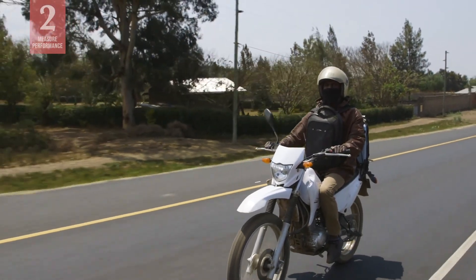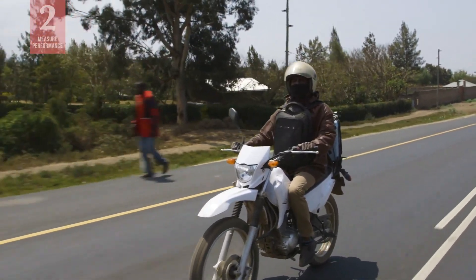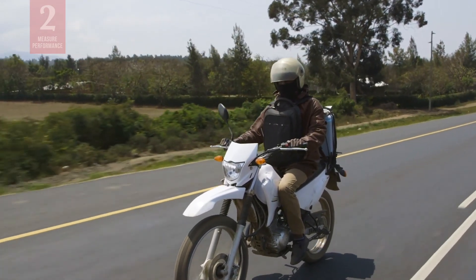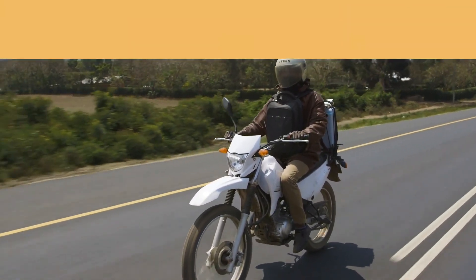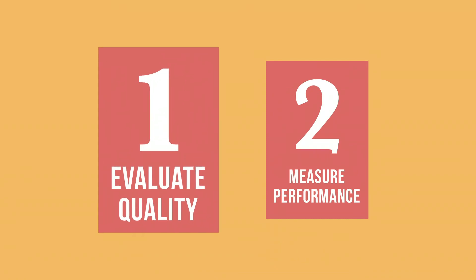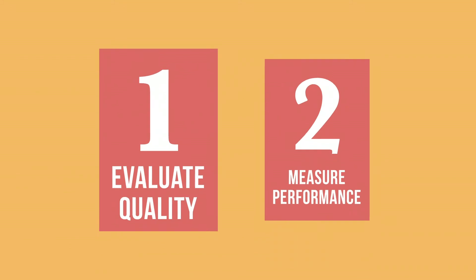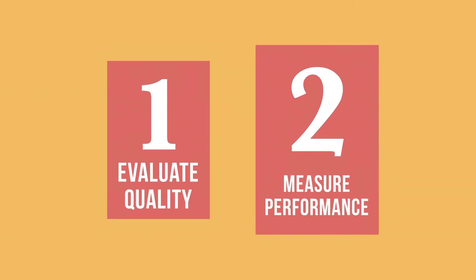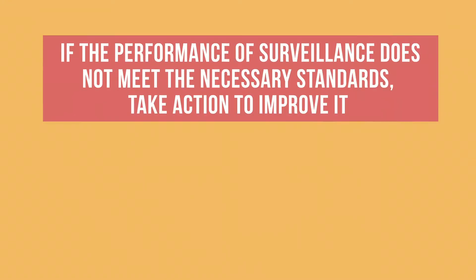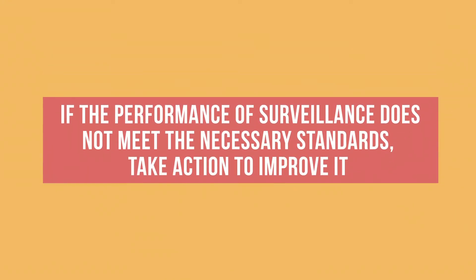A low percentage of cases investigated could reveal a lack of transport needed to conduct an investigation. You now know how to monitor a surveillance system by evaluating the overall quality of surveillance reporting and measuring performance of disease-specific surveillance. Remember, if the performance of surveillance does not meet the necessary standards, take action to improve it.